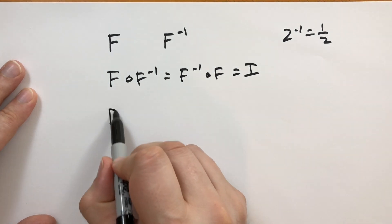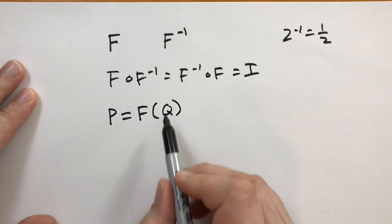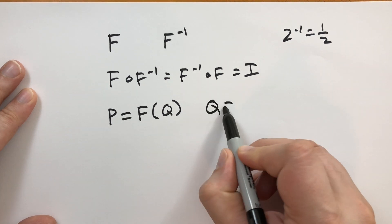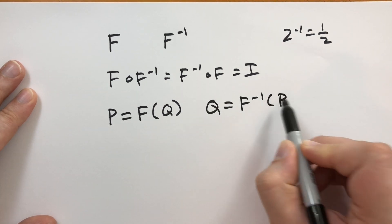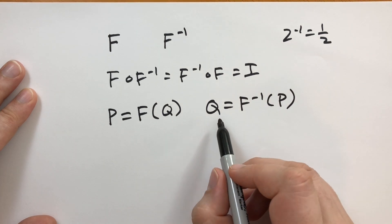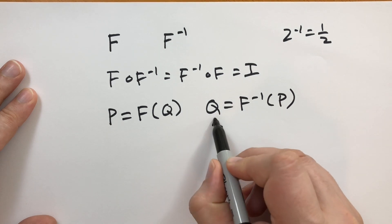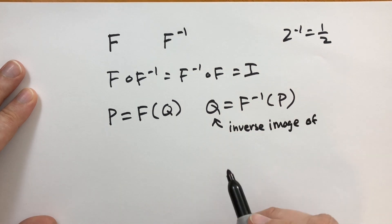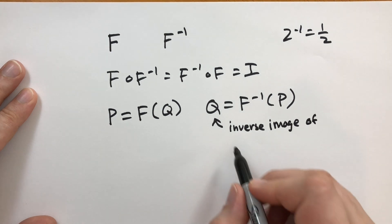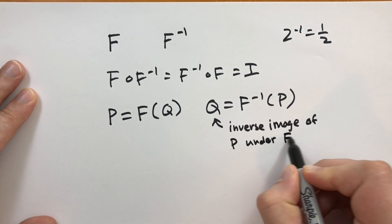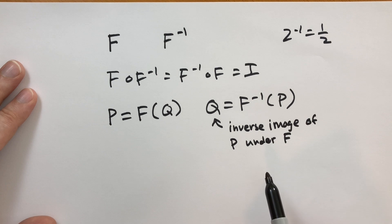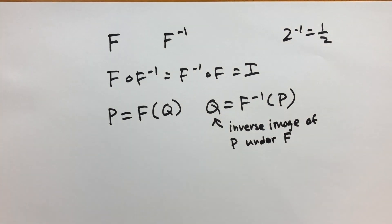If P is what you get when you pass Q into F — so P is the image of Q under F — then Q is the image of F^(-1) of P, or we might say Q is the inverse image of P under F. So Q is the image of the inverse of F applied to P, or it's the inverse image of P under F.